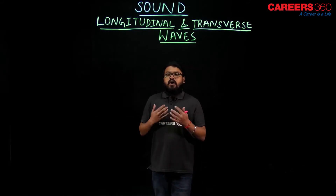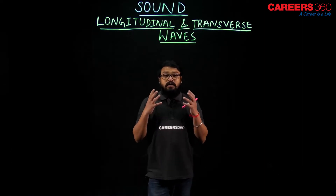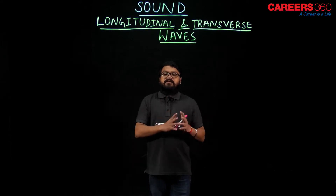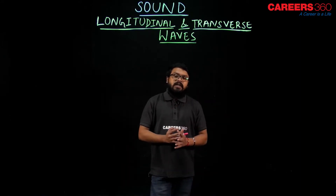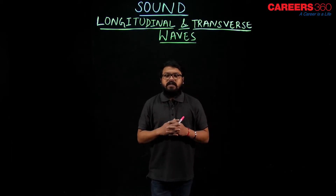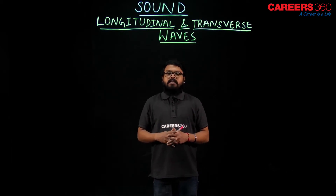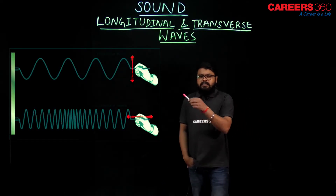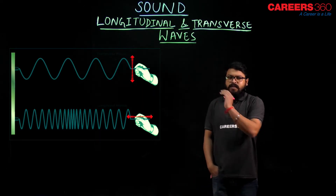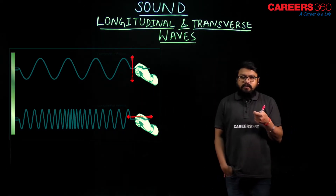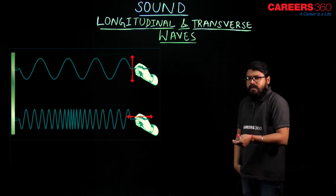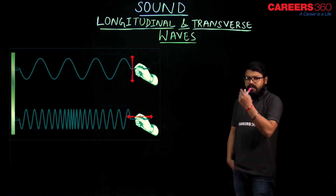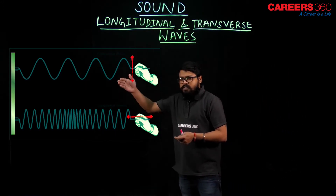Let us see how longitudinal and transverse waves are formed, and then we will see the difference between them. Here is the picture: there is a thread or a string. One end is fixed to a wall and you are holding the other end. Now you move it in a vertical direction — vertically up and vertically down. You can generate a wave and that wave travels towards the fixed end.